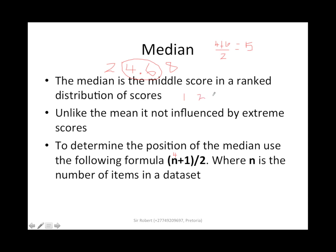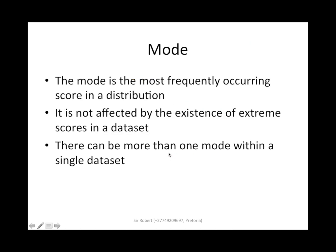Let's give one more example: 1, 2, 5, 5, 7, 10. This data is already in ascending order. There are 6 numbers, so it's 6 plus 1 divided by 2, which gives 3.5 — wait, in this case it's five numbers... so 5 plus 1 divided by 2 is 3. The median position is 3, so counting 1, 2, 3, the median is 5. Remember the formula n plus 1 divided by 2 gives the position, not the median itself.